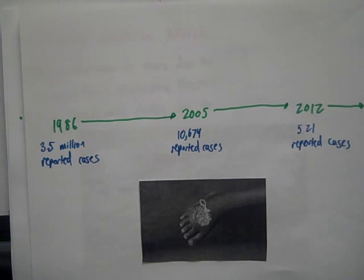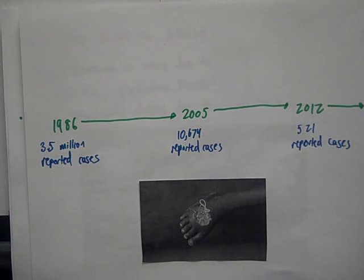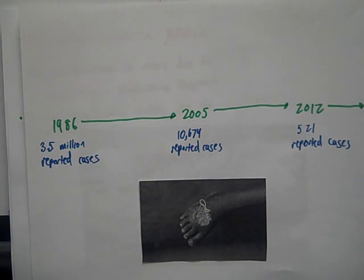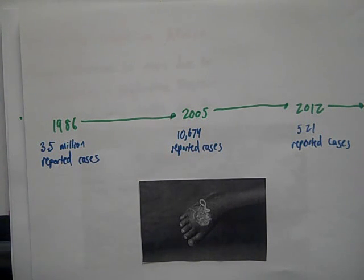In 1986, there were 3.5 million reported cases of the guinea worm. In 2005, those reported cases had dropped down to 10,674. And now, in 2012, there are only 521 reported cases.